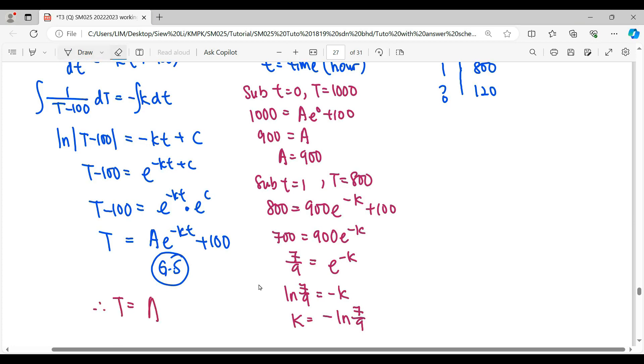When I substitute back, A is 900, e to the negative Kt, so negative negative become positive, then plus 100. So this is our particular solution.